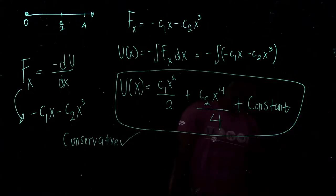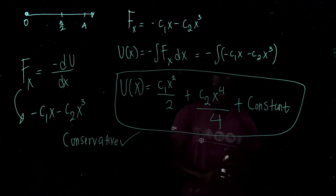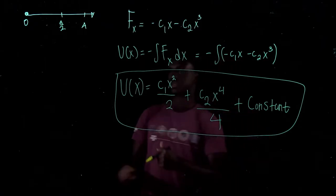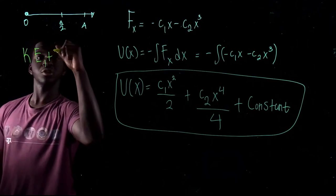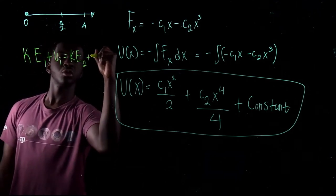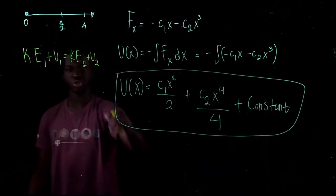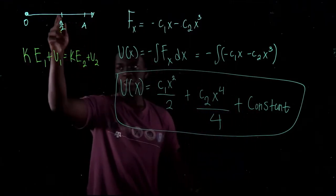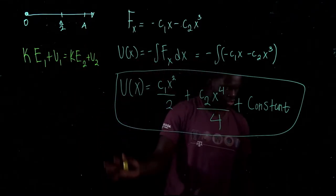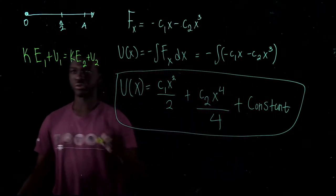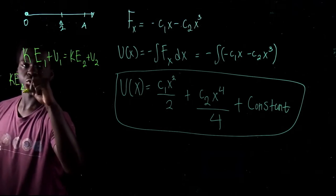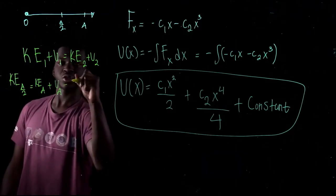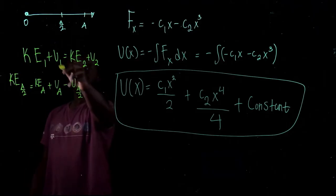Now for part B, find the kinetic energy at A over 2. We're going to use conservation of energy: KE₁ plus U₁ equals KE₂ plus U₂. Position A over 2 is state 1 and position A is state 2. Rearranging gives KE at A/2 equals KE at A plus U(A) minus U(A/2).